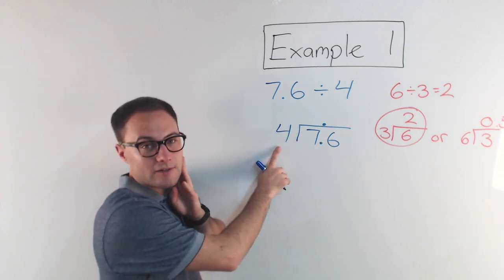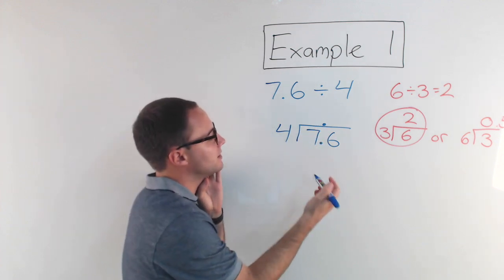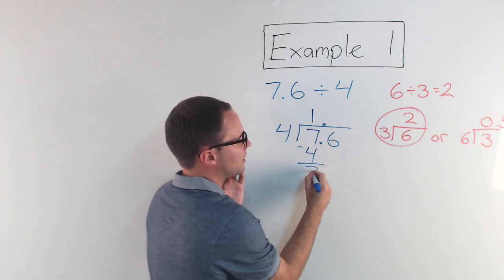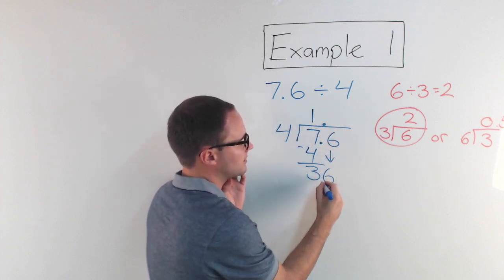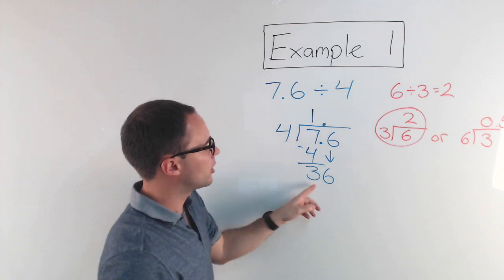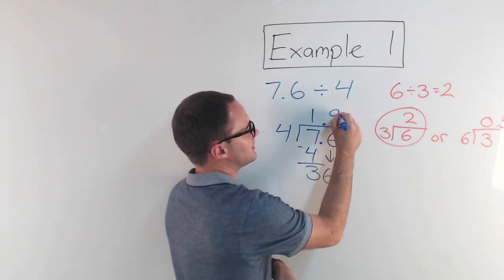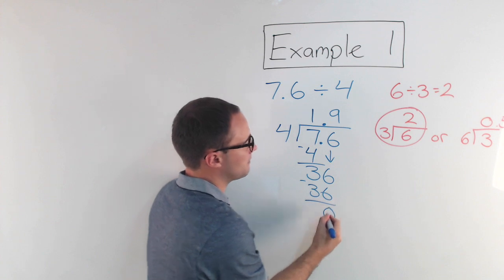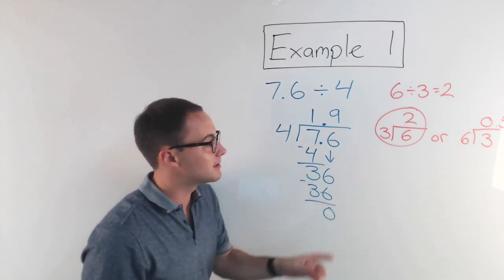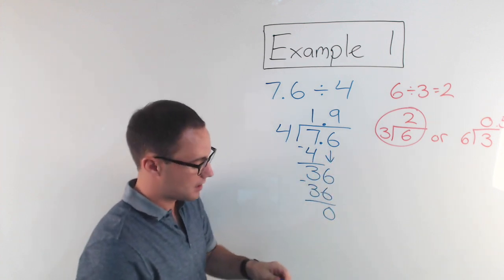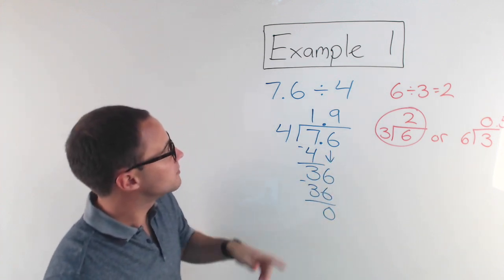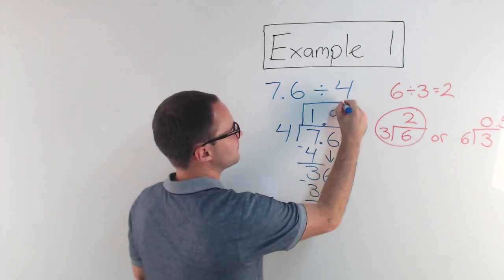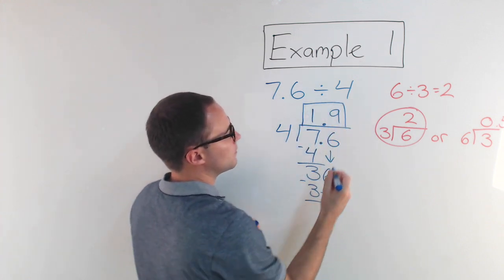Now we just divide. 4 into 7 goes once — that's 4, subtract, I get 3, bring down the 6. 4 into 36 is 9, that is 36, so I am finished. There's nothing left, so I'm done. 7.6 divided by 4 is 1.9.